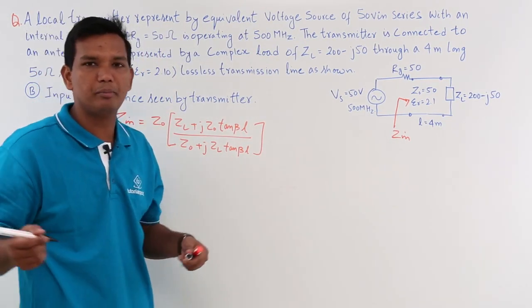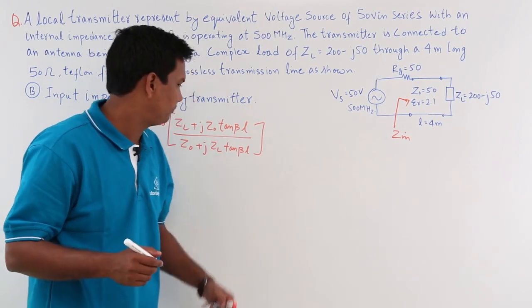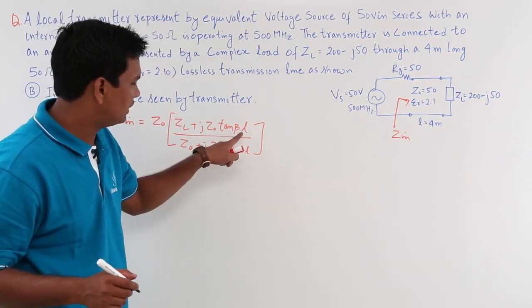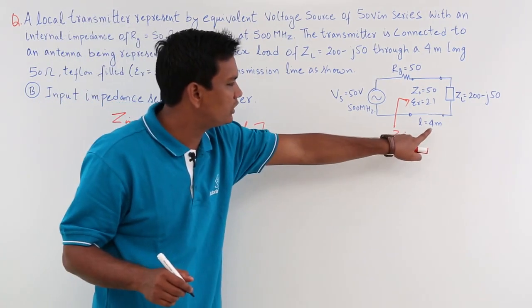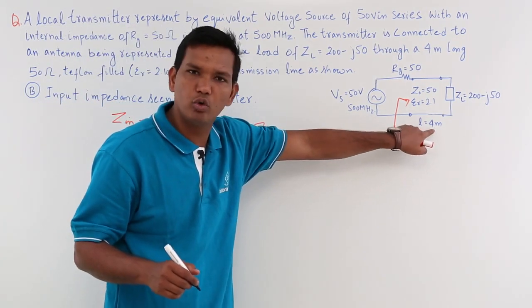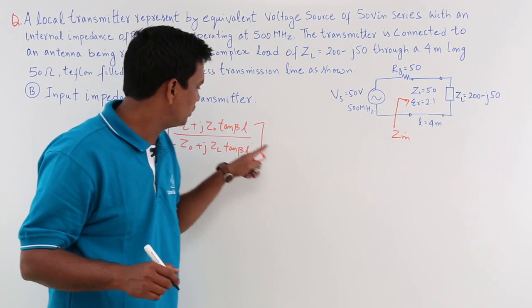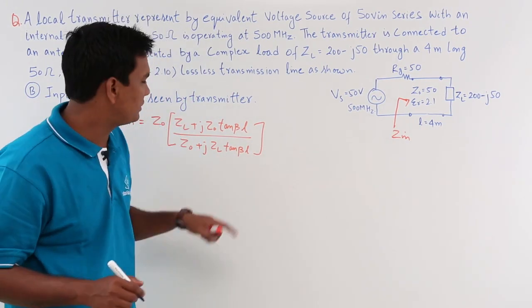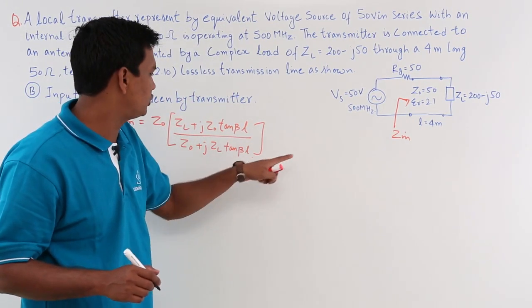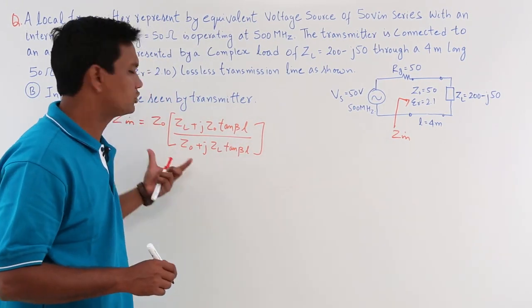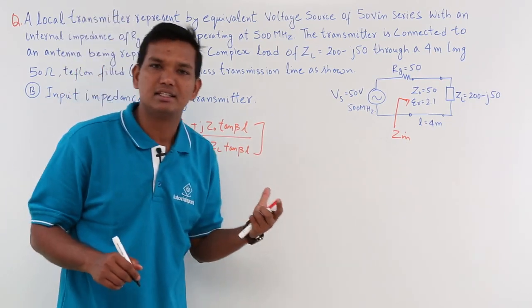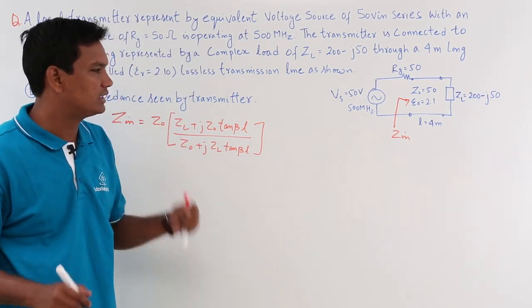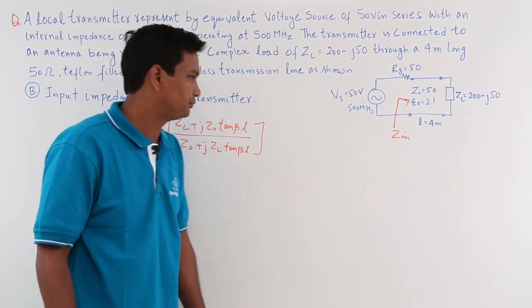Let us see what the βL part would be. What is the length? The length is also given to us — it is 4 meters. The only thing I have to find is what β is. Once I am able to find β, there is nothing left in the question. Let us see how I can find β.